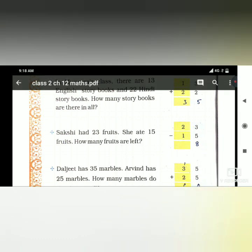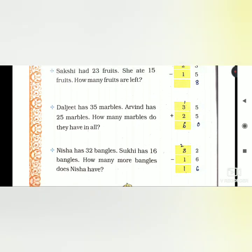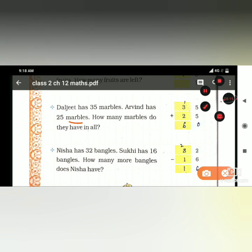Keba has 35 marbles and Arvind has 25 marbles. How many marbles do they have in all total? We add 35 plus 25. 5 plus 5 is 10, write 0 and carry 1. 3 plus 2 plus 1 is 6. Answer is 60.